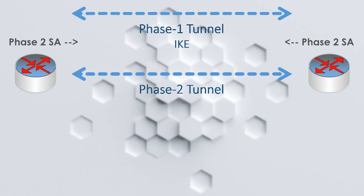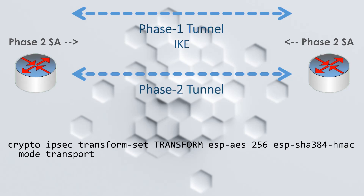On a Cisco router, all these settings are defined in a transform set. The transform set includes a name, a cipher for encryption, and the hashing mode. This is also where we tell IPsec to use transport mode. The alternative is tunnel mode, but we're going to let GRE handle the tunnel, and IPsec can focus on the encryption.